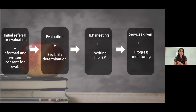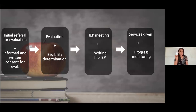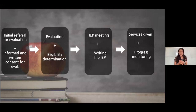The initial referral for evaluation begins when a caregiver, teacher, or anyone in the school says they've tried interventions and believes a student needs a referral. The team must agree, and the school must then send informed written consent for evaluation from a legal guardian. There is a legal timeframe — schools cannot wait around. They cannot conduct an evaluation without written, informed consent.